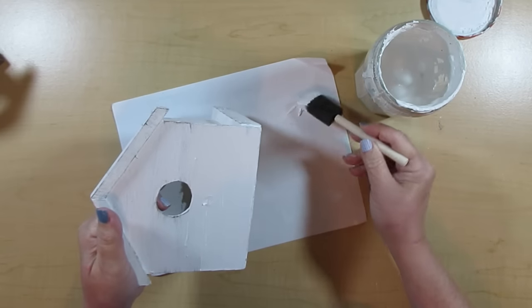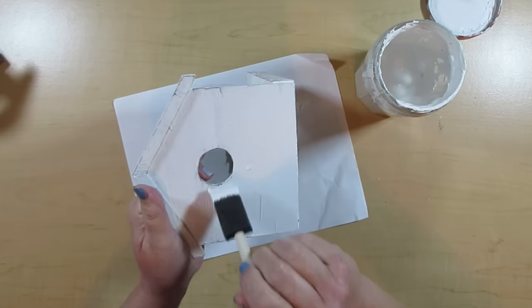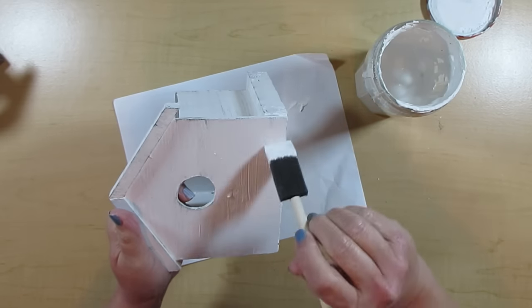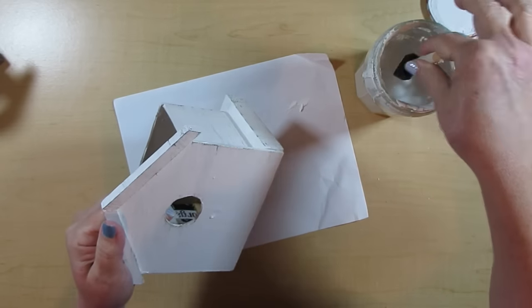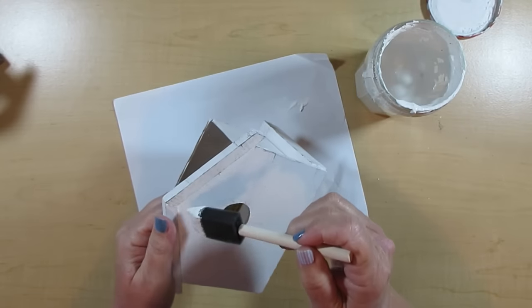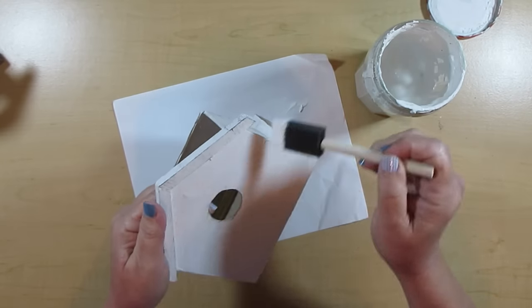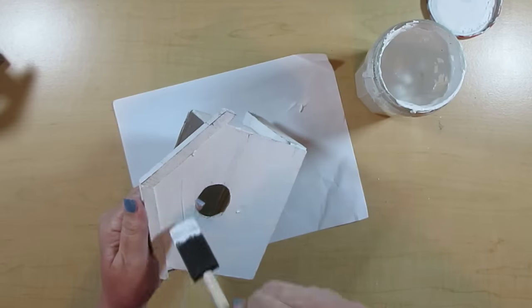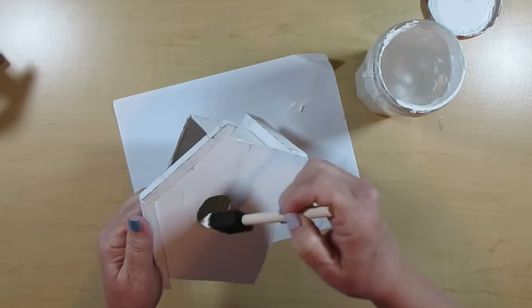I'm starting off with this birdhouse sort of thing. I created this a while ago, but all you need to do is grab a birdhouse shape, whether it's from Hobby Lobby or Dollar Tree, wherever, and then glue a box onto the back of it. And that's basically what I did, but I just created my own.